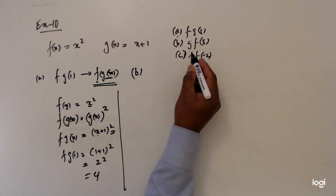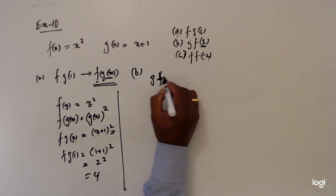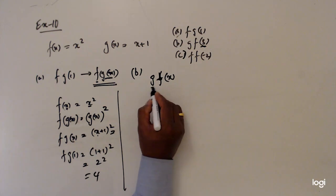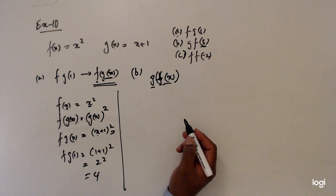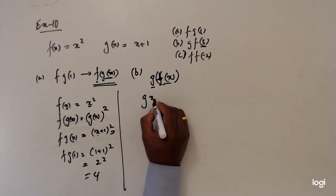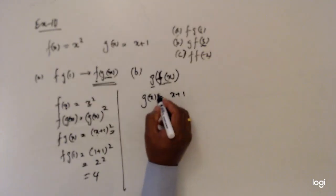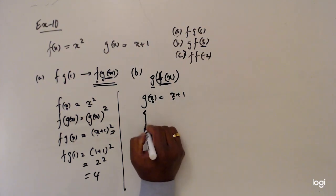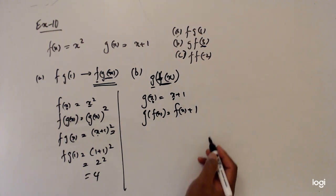Sometimes we have to expand, but in this case we don't need to. So 2 squared equals 4. For part b, we want to find gf(3). First of all we will find gf(x). Now we will write g first, and the variable is going to be f(x). g(x) is x plus 1, so instead of x we put f(x).